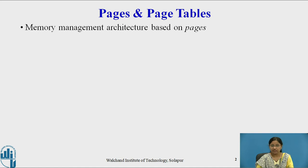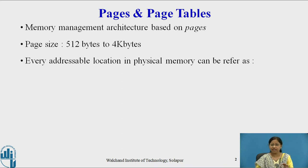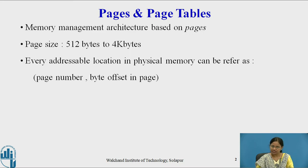The memory management architecture based on pages divides the physical memory into equal-size pages — that is the paging mechanism. The page size can range from 512 bytes to 4 kilobytes. Every addressable location in physical memory can be referred to as a page number and byte offset pair. So every physical location in memory can be referred to by this pair: page number and byte offset.